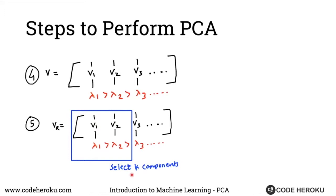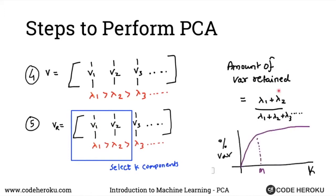The amount of variation that your reduced subset will retain will be given by, let's say we are just taking two vectors over here corresponding to lambda 1 and lambda 2. The amount of variation that we are retaining is given by lambda 1 plus lambda 2 divided by all the lambdas. This will give us the amount of variation that we are retaining in this data.